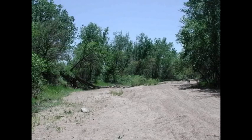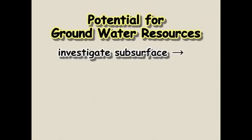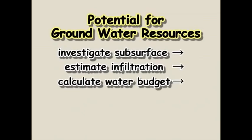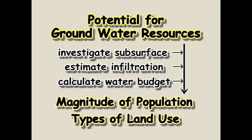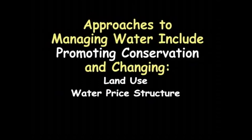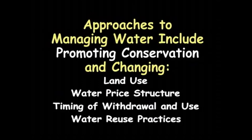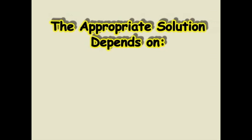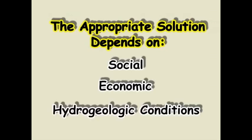To determine the potential for groundwater resources in a specific basin, we need to drill wells to investigate the subsurface, estimate the rate of infiltration, and calculate a water budget. When this information is available, we can estimate the magnitude of population and types of land use that may be supported in the basin. Approaches to managing water include promoting conservation and changing land use, water price structure, the timing of water withdrawal and use, or treatment and reuse practices. The appropriate solution differs depending on social, economic, and hydrogeologic conditions.